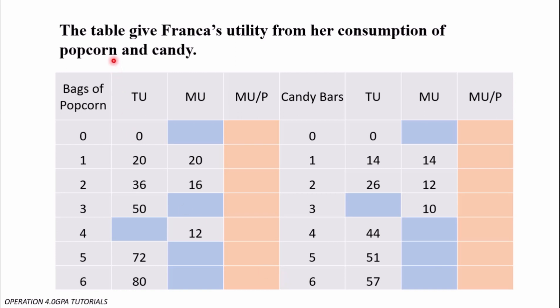We have a question: the table gives Franca's utility from consumption of popcorn and candy. We have bags of popcorn here with quantities, and then candy bars as well. We also have total utility — the total satisfaction — and then we have marginal utility, which is the additional satisfaction that she derives as she consumes more and more of the commodity.